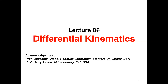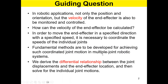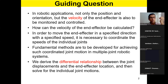Next up is lecture six on differential kinematics, using some slides from Professor Khatib. Some of the guiding questions for the unit are these. In manipulation, not only the positions — as we discussed earlier with forward kinematics — we also need to know the speeds: how fast the end effector is moving with respect to the world or base coordinate frame. That is why we have differential kinematics, in addition to position kinematics.